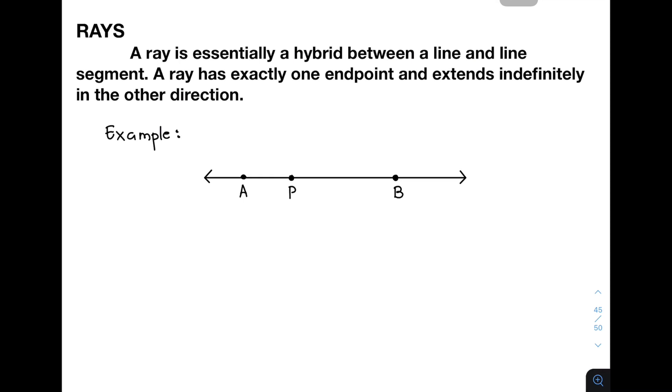a ray is essentially a hybrid between a line and a line segment. When you say hybrid, it is a combination of a line and a line segment. A ray has exactly one endpoint and extends indefinitely in the other direction. This one is the symbol for ray. Sometimes they're putting point here, but it's not necessary. That is a symbol for ray.